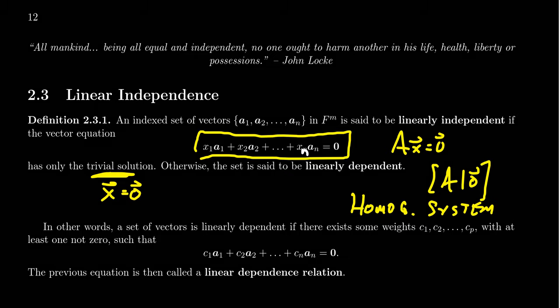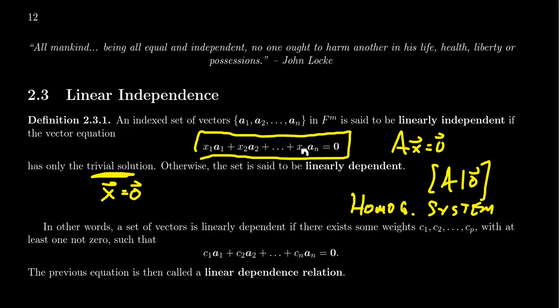But on the other hand, are there other solutions to this homogeneous system? That's really the question at hand. We say that the vectors a₁ through aₙ are linearly independent if there are no other solutions. Otherwise, we say the set of vectors is linearly dependent, which would mean that there's a non-trivial solution to this homogeneous system.